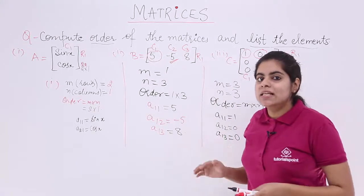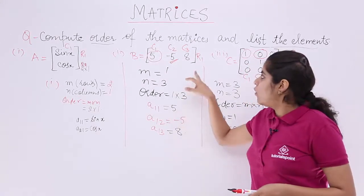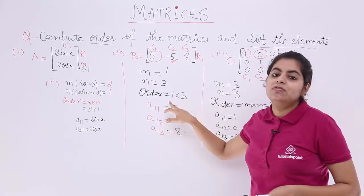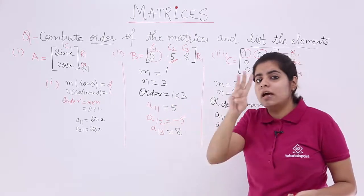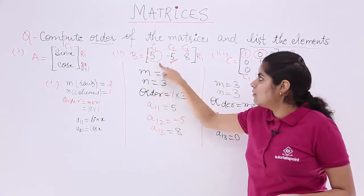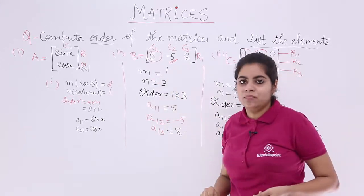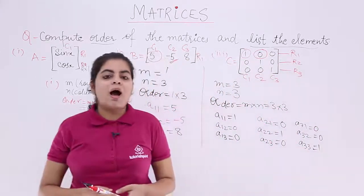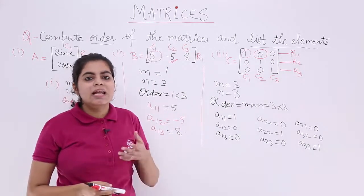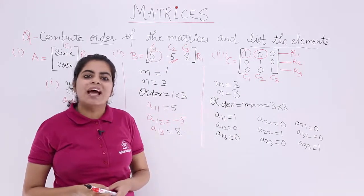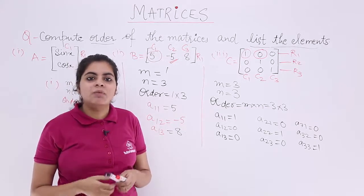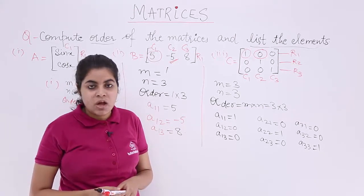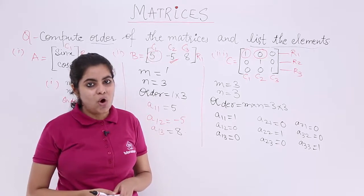Similarly, another example. What is the order 1 by 3? 1 by 3 means 1 into 3 is 3. So how many elements should be there? 3. How many are there? 5, minus 5, 8, that's 3. So in this video, we saw a basic numerical problem illustrating the order and the listing of number of elements. In the next video, we will be seeing some more variety of questions on the same topic of order.